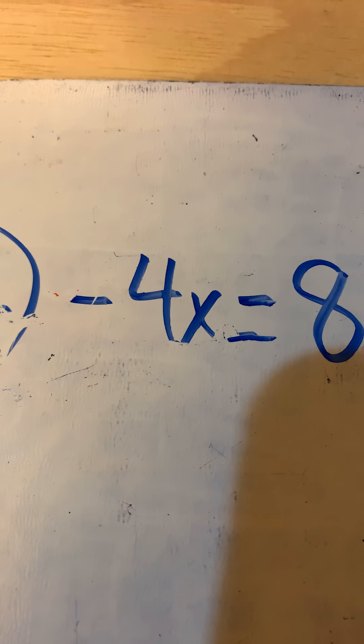That means negative 4 multiplied by x. To solve this, you always do the opposite of what's beside the variable. The opposite of multiply by negative 4 is to divide by negative 4.